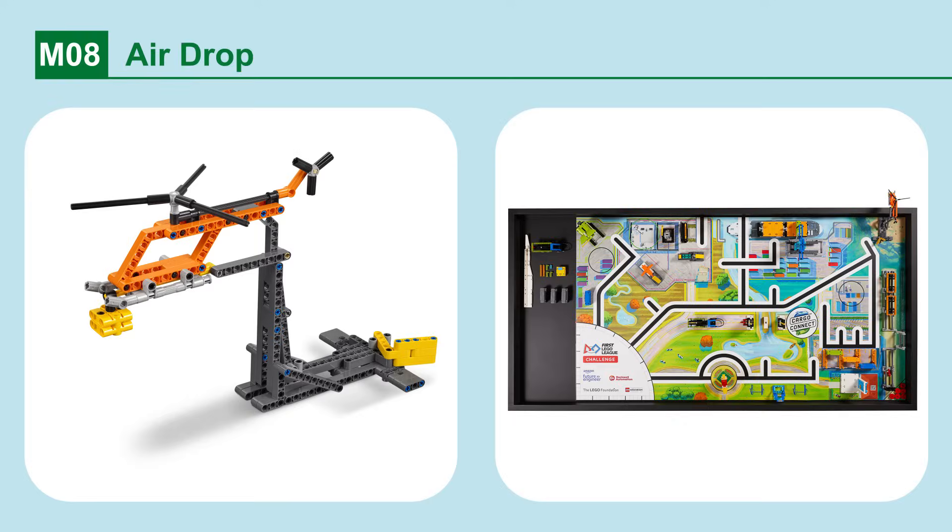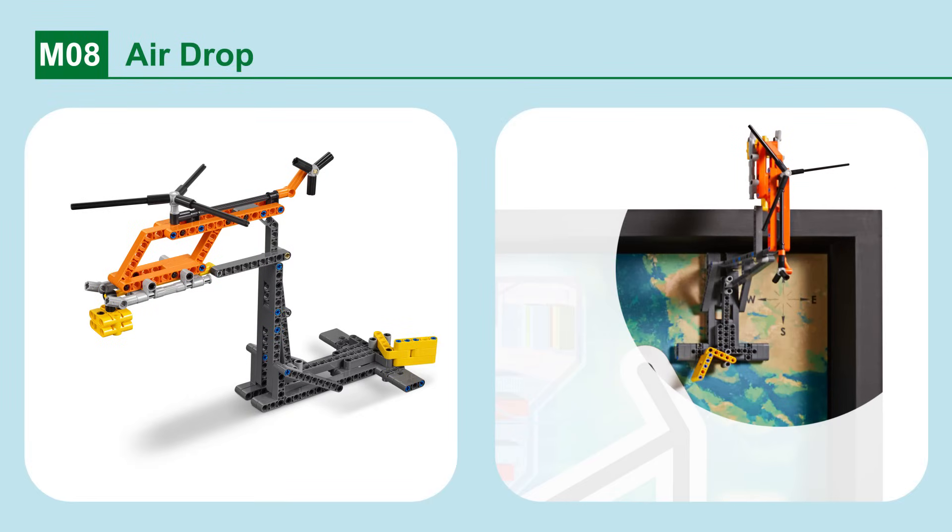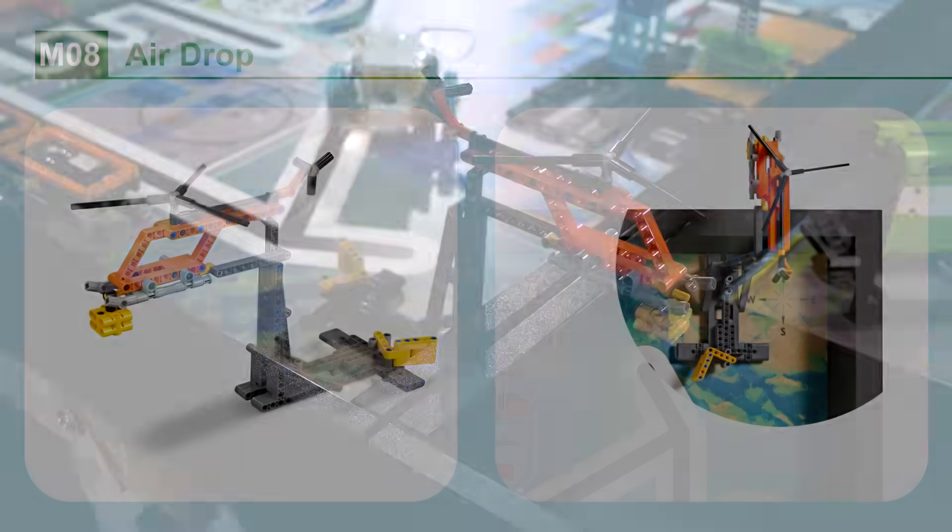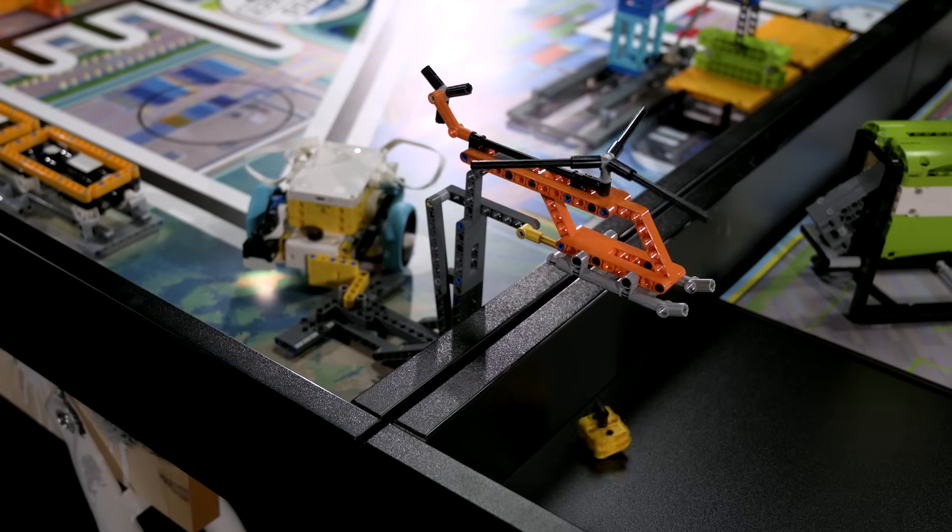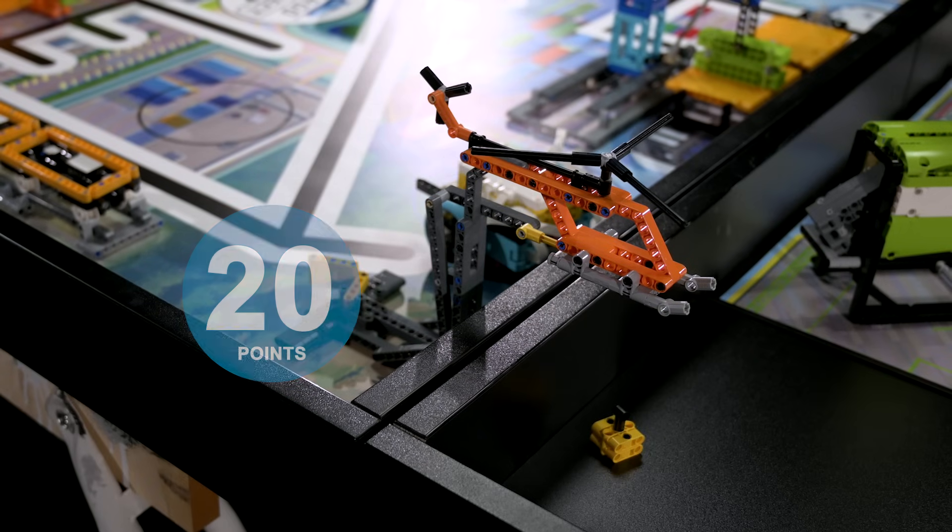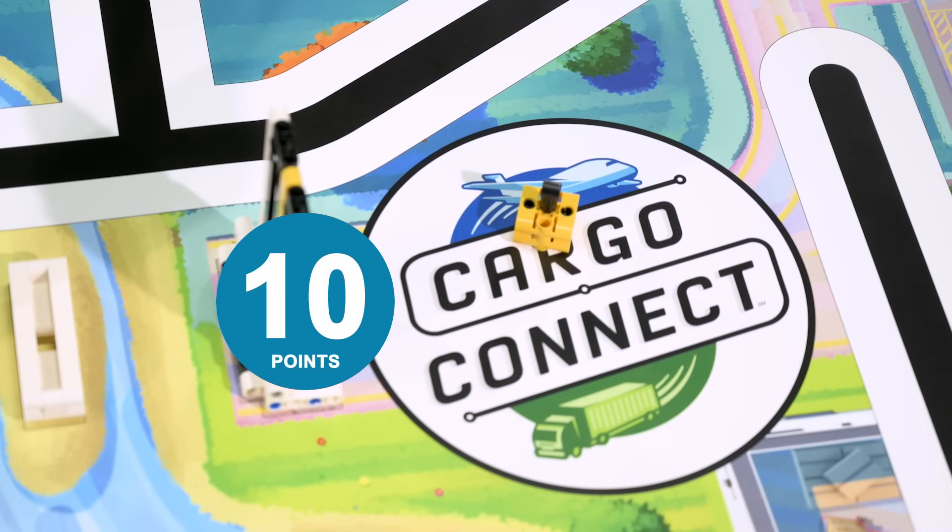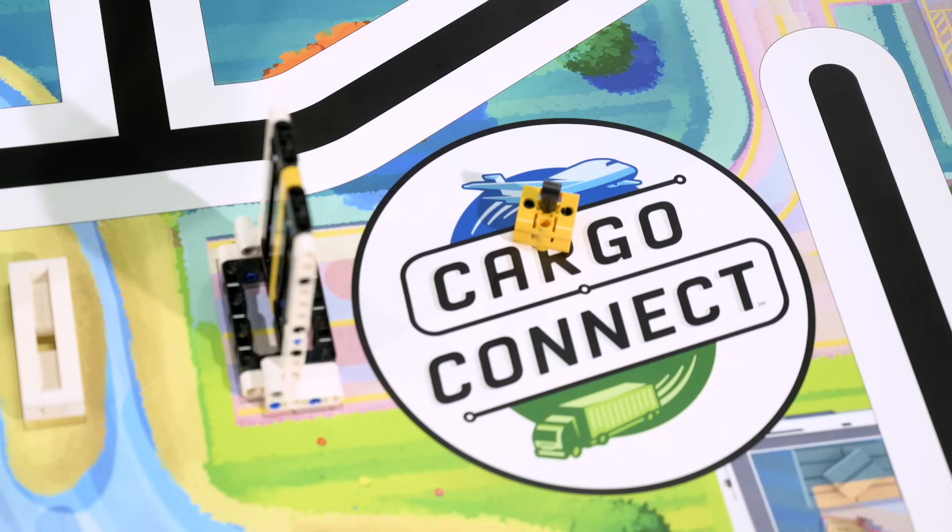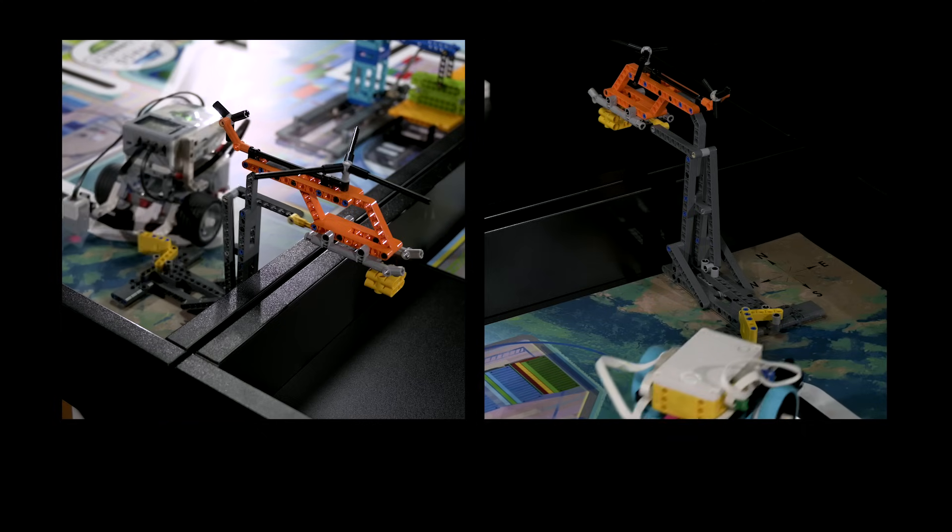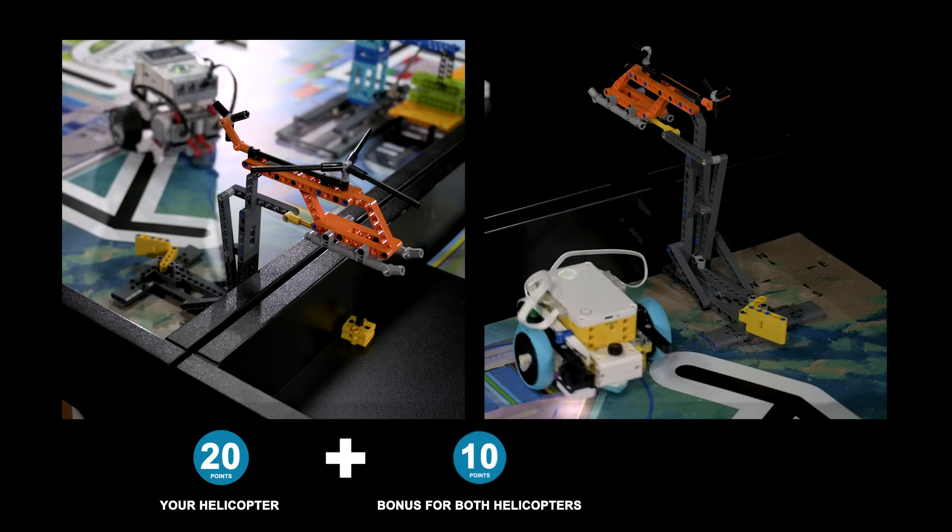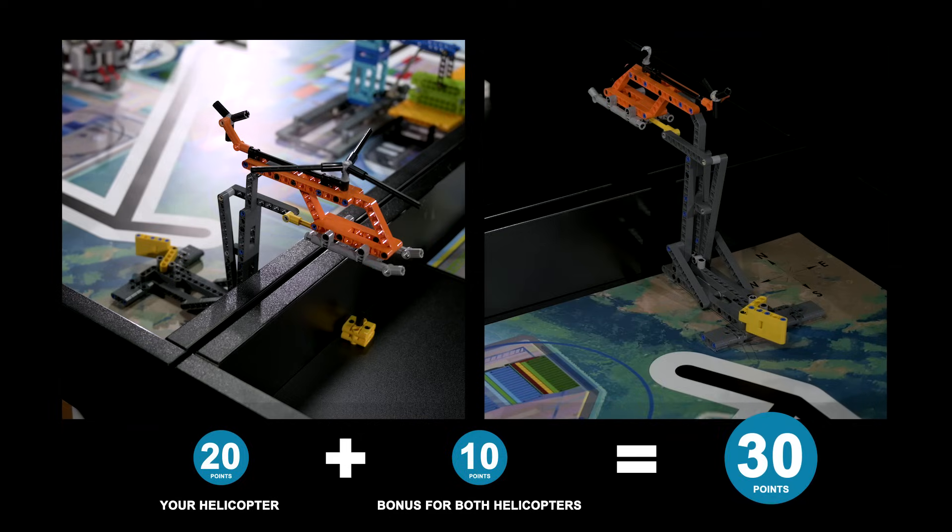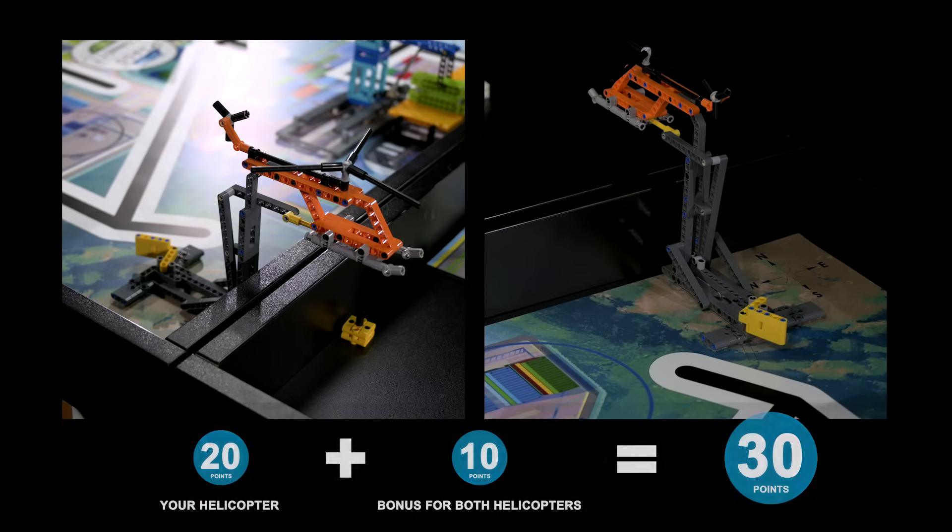Mission 8. Airdrop. Release the food package from the helicopter onto the other field. If the other team releases the food package onto your field, deliver it to the cargo connect circle. If the food package is separated from your helicopter. If the food package that came from the other field's helicopter is completely in your cargo connect circle. If both teams have separated their food packages from their field's helicopters, a bonus is scored. The maximum score possible is 40 points for each team.